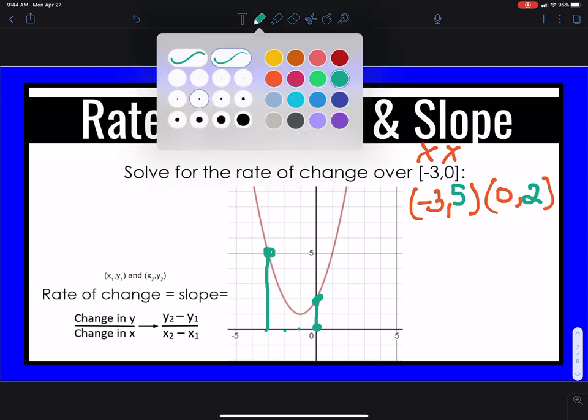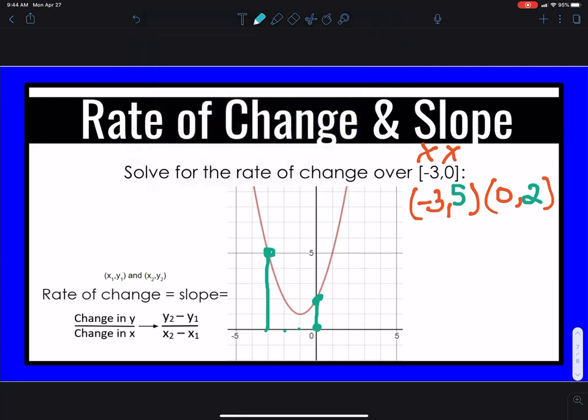Now all you need to do is solve using the formula. So y2 minus y1 over x2 minus x1. So go ahead and label them x1, y1 because it's written first. And x2, y2 because it's written second. Then we're going to go ahead and plug in. So it's y2, which is 2, minus y1, which is 5, over x2 is 0, minus x1 is negative 3.